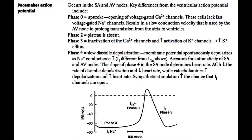This graph shows the voltage potential seen in a pacemaker cell in the heart. Pacemaker cells occur in the sinoatrial and atrioventricular nodes. The sinoatrial node cells have a faster pacemaker potential than the AV nodal cells, and therefore the sinoatrial node is generally the pacemaker of the heart.